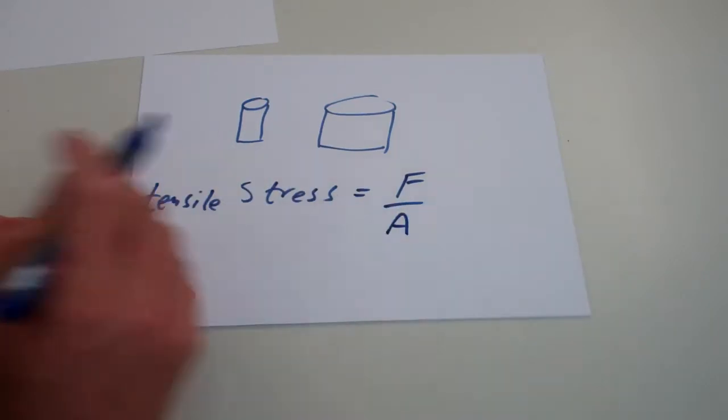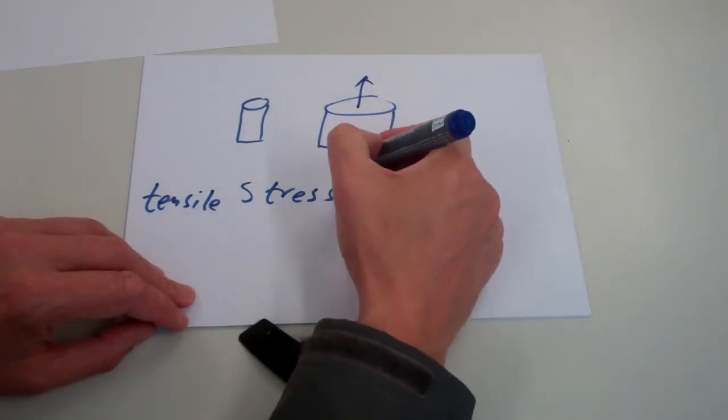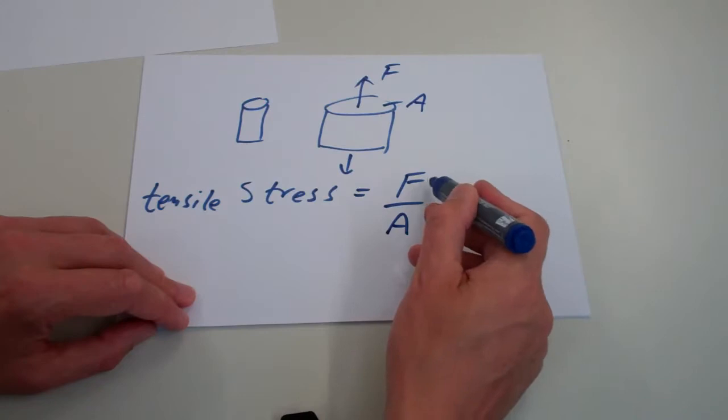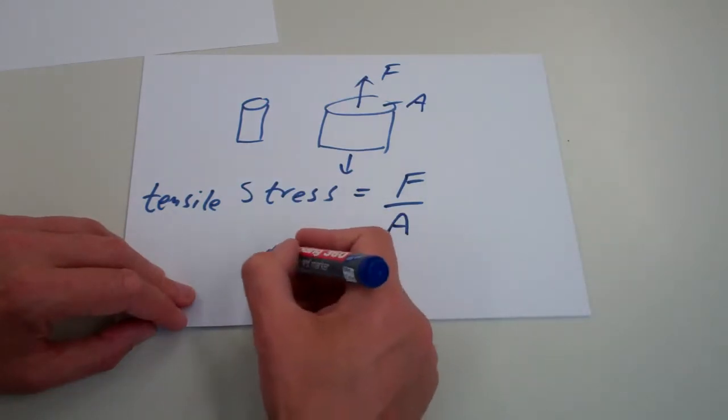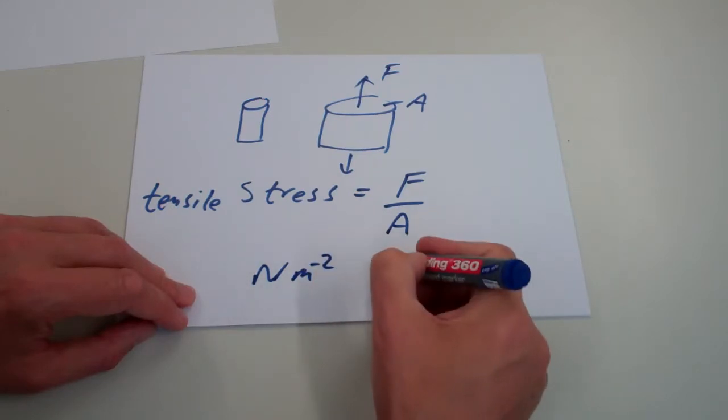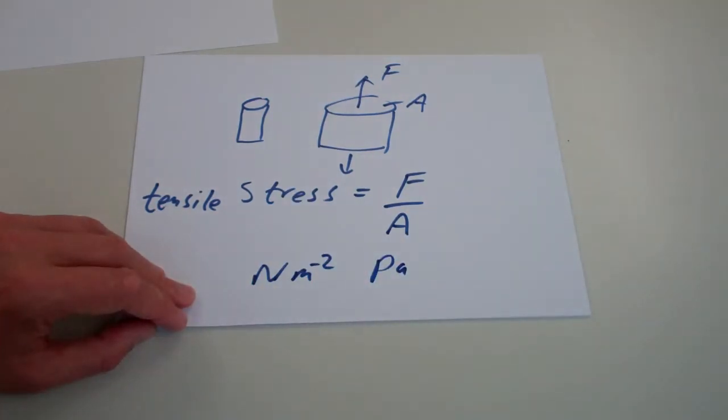And it's simply the force, the amount of force applied, divided by the cross-section area. The force in newtons, area in meters squared. So it's got units of newtons per meter squared, or pascals is the same unit, like pressure.